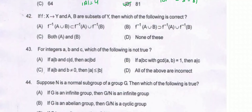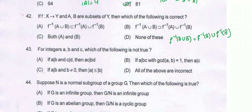Question number 42: if F is a function from X to Y and A, B are subsets of Y, then which of the following is correct? F inverse of A union B equals F inverse of A union F inverse of B. If A is a subset of A union B, then F inverse of A is a subset of F inverse of A union F inverse of B.